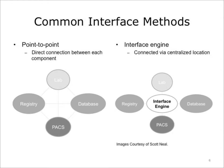There are two widely used methods for connecting dissimilar systems in EHR systems: point-to-point, in which there is a direct connection between each component, and an interface engine, in which components are connected via a centralized location. Point-to-point integration means ensuring that each separate component can reliably and directly communicate with each other component. An interface engine acts as a liaison between each of the separate components and contains all the coding required to facilitate communication between them.